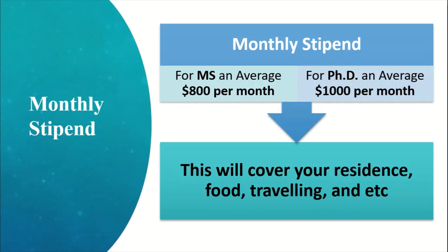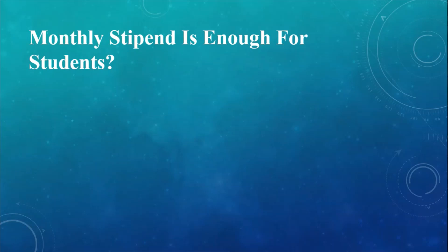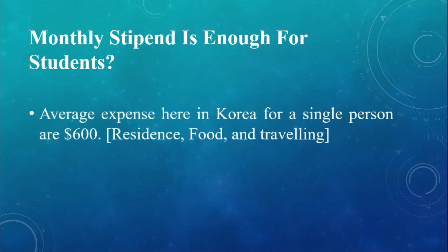For PhD, most of the time you will get one thousand dollars or more. There are lots of students getting fourteen hundred dollars per month, and I know some students getting sixteen hundred dollars per month through professor funding. It totally depends on the professor, his criteria, and the available resources to fund a student.